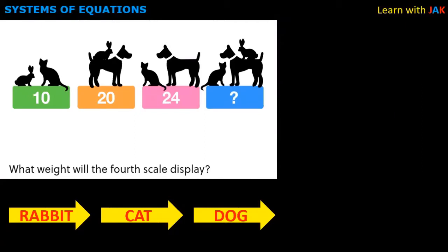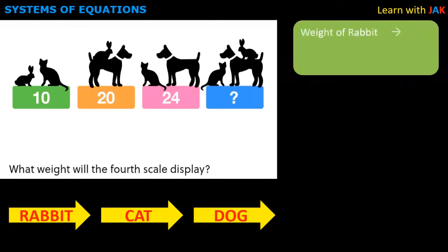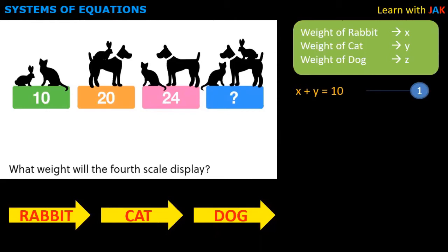This is the problem. If we use algebra to solve it — in this case, the weight of our animals. Let's start thinking. I will consider X for the rabbit, and we will use variables for the weight. I represent x plus y equals 10. Then x plus z equals 20. That is z plus y — cat and dog — z and cat and y.